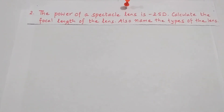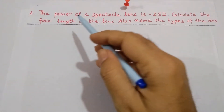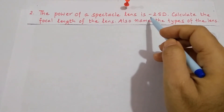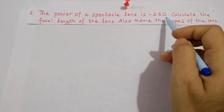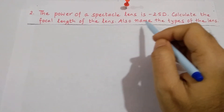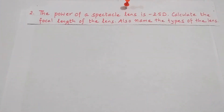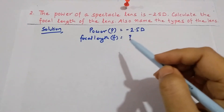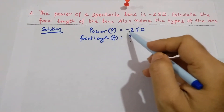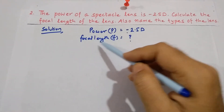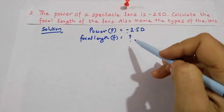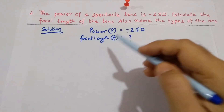This is our next question. The power of a spectacle lens is minus 2.5 D. Calculate the focal length of the lens and also name the type of lens. The power P equals minus 2.5 D is given, and we have to find focal length F.